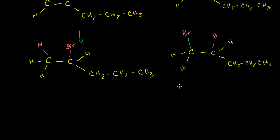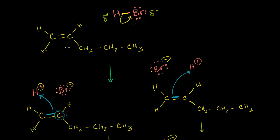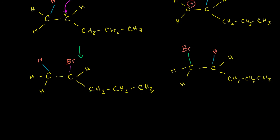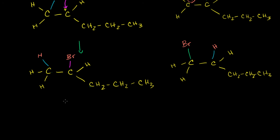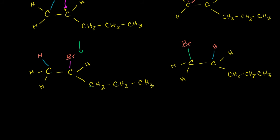Both mechanisms seemed like reasonable pathways. But if you were to do this experimentally — take hydrogen bromide and add it to pent-1-ene — the great majority of the product will be 2-bromopentane. The minority of the product will be 1-bromopentane. So the first mechanism we showed is actually the one that is more likely to happen.